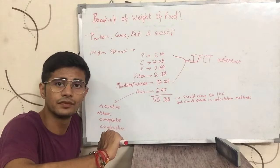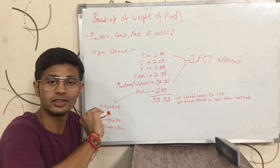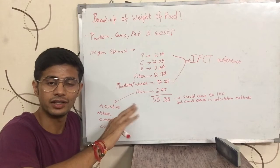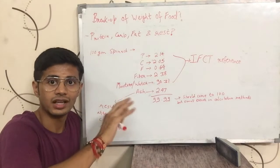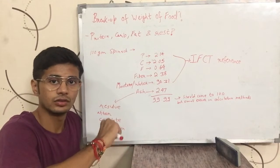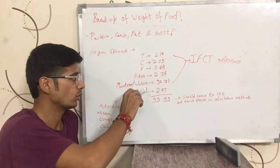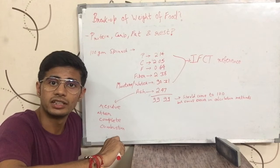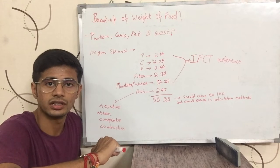So now you don't need to be confused about where the rest of the weight went beyond protein, carbohydrate and fat — it comes from fiber, water and ash. If you like this video please like, comment and share, and see you in the next video.